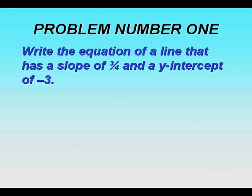So let's look at problem number one. Write the equation of a line that has a slope of three quarters and a y-intercept of negative three.